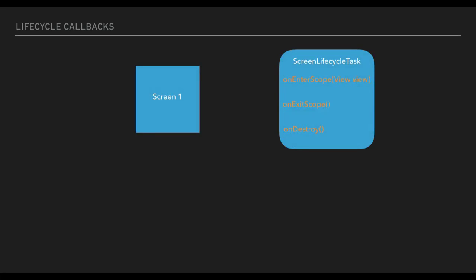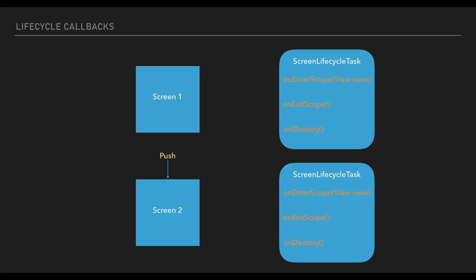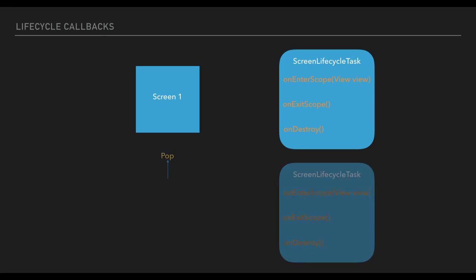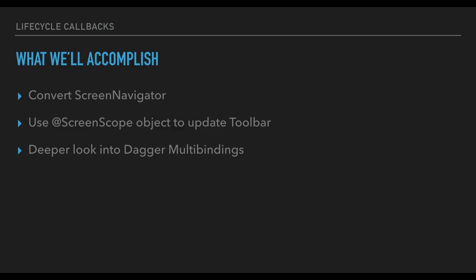Some examples of what you might do in these callbacks are updating the toolbar in on enter scope, stopping listening for click events in on exit scope, and disposing of any disposables from the activity level in on destroy. We will take advantage of these new tasks more in future sections, but in this section we'll cover converting our screen navigator implementations to be self-reliant as activity lifecycle tasks, creating objects to handle the toolbar setup for each screen, and looking more into Dagger multibindings.